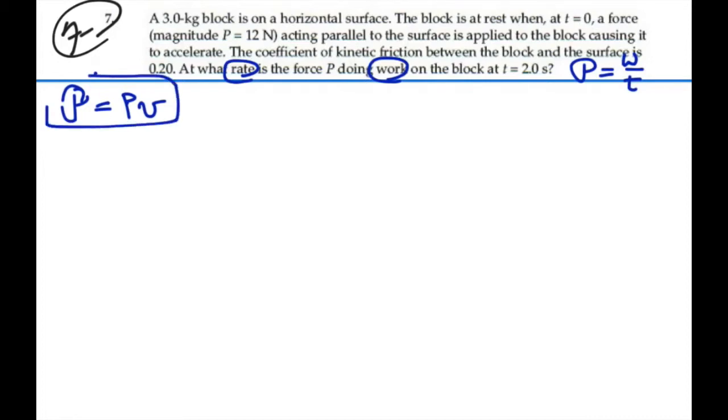Let's do a free body diagram of the block. Here's our mass, equal to 3 kilograms, and we have a force P going to the right, equal to 12 newtons. We have a frictional force to the left, equal to mu times the normal force. We have the normal force, and we have the weight.